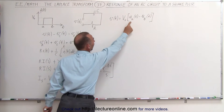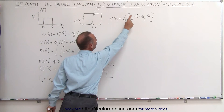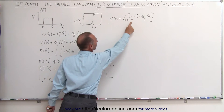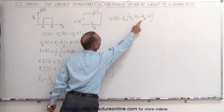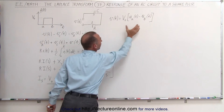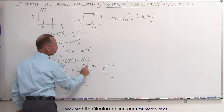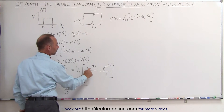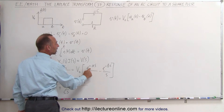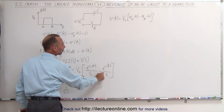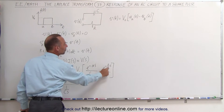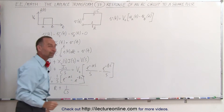V sub nought is a constant, giving 1 over S for each unit step term, plus the time shifts: 1 over S times E to the minus A·S and 1 over S times E to the minus B·S.